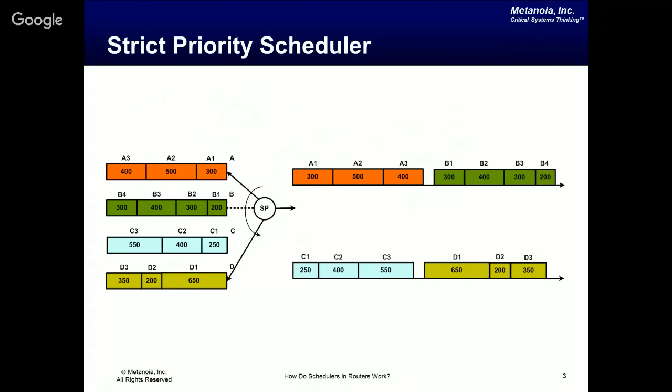Starting with the strict priority scheduler: it serves queues A, B, C, D in strict priority going from A down to D. The scheduler only moves to B when there are no packets to serve in A. The moment a packet in QA arrives, the scheduler will serve the existing packet from QB and come right back. In our example, there are three packets in A, four in B, three in C, and four in D with the sizes shown.